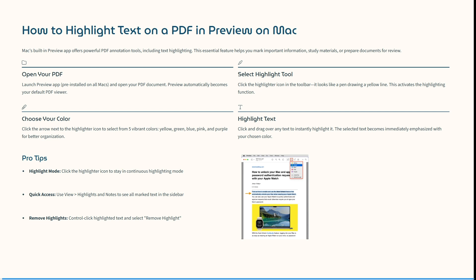Click the arrow next to the highlighter icon to select from five vibrant colors, including yellow, green, blue, pink, and purple for better organization. Then click and drag over the text to instantly highlight it. The selected text becomes immediately emphasized with your chosen color.